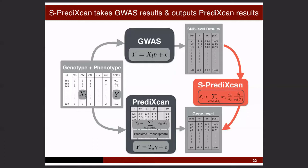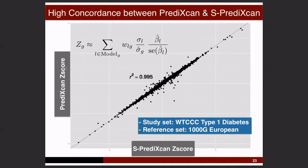Using summary statistics, we can get results very similar to having individual-level data. This is a comparison of individual-level versus summary-level Z-scores, and the points are pretty much on the one-to-one line. This is so much easier to run than getting access to large individual-level datasets. Also, GWAS consortia spend a lot of time doing QC, and when you use the summary-level data, you get that for free. One important caveat is that we need to get the LD — the correlation between SNPs — right.